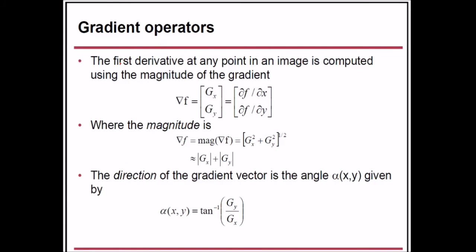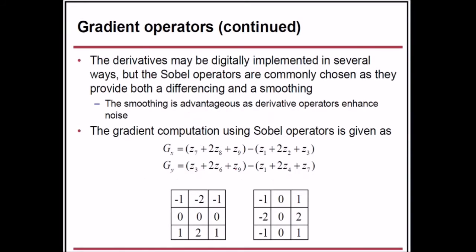The first derivative at any point can be computed using the magnitude of the gradient ∇f = [∂f/∂x, ∂f/∂y]. The magnitude is approximated as |G_x| + |G_y|, and the direction of the gradient vector is given by θ = tan⁻¹(G_y / G_x). The derivative may be digitally implemented in several ways, but the Sobel operators are commonly chosen as they provide both differencing and smoothing. Smoothing is advantageous because derivative operators enhance noise.